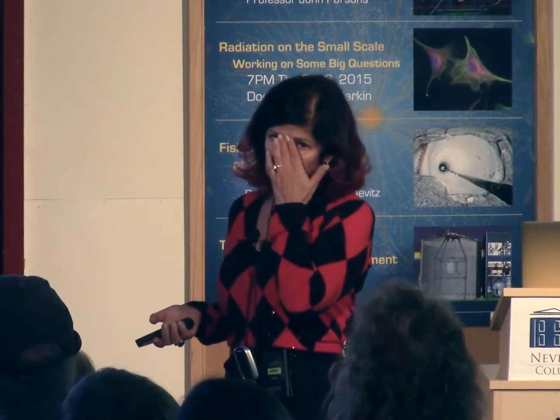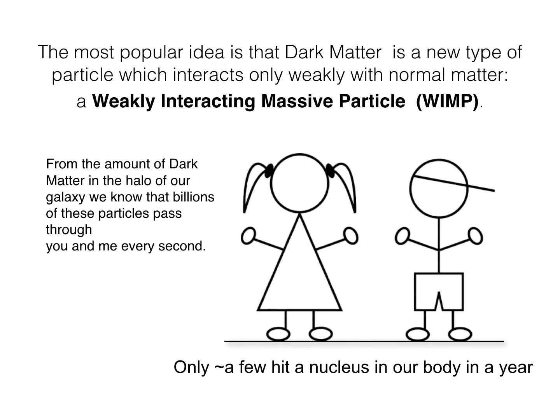We are looking for something new — probably a new type of particle which has yet to be found. There are many ideas, a zoo of candidates and many models, but the most popular idea is that dark matter is a new type of particle which interacts only very weakly. That's why we give it the name WIMP — a weakly interacting massive particle. With these WIMPs streaming from the halo of the galaxy in which we are, there are billions of them going through you, through me, through everything — just like neutrinos, they're weakly interacting. Neutrinos would be a great candidate, but they're just not massive enough.